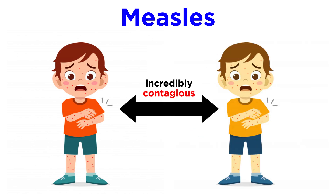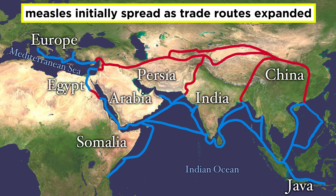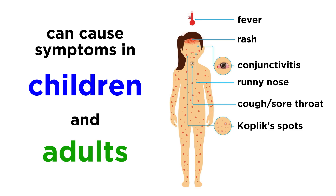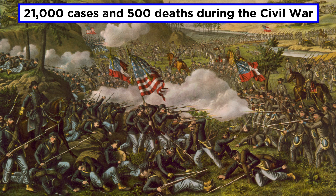The thing about measles is that it is incredibly contagious. It's considered to be one of the most common and most unpleasant viral infections in existence. Historians believe that transmission of measles increased dramatically as trade routes expanded and worldwide travel became more popular. And even though measles is notorious for causing childhood disease, it can also cause severe symptoms in adults. In fact, there were over 21,000 reported cases of measles on both sides of the Civil War in the 1860s, resulting in over 500 deaths.